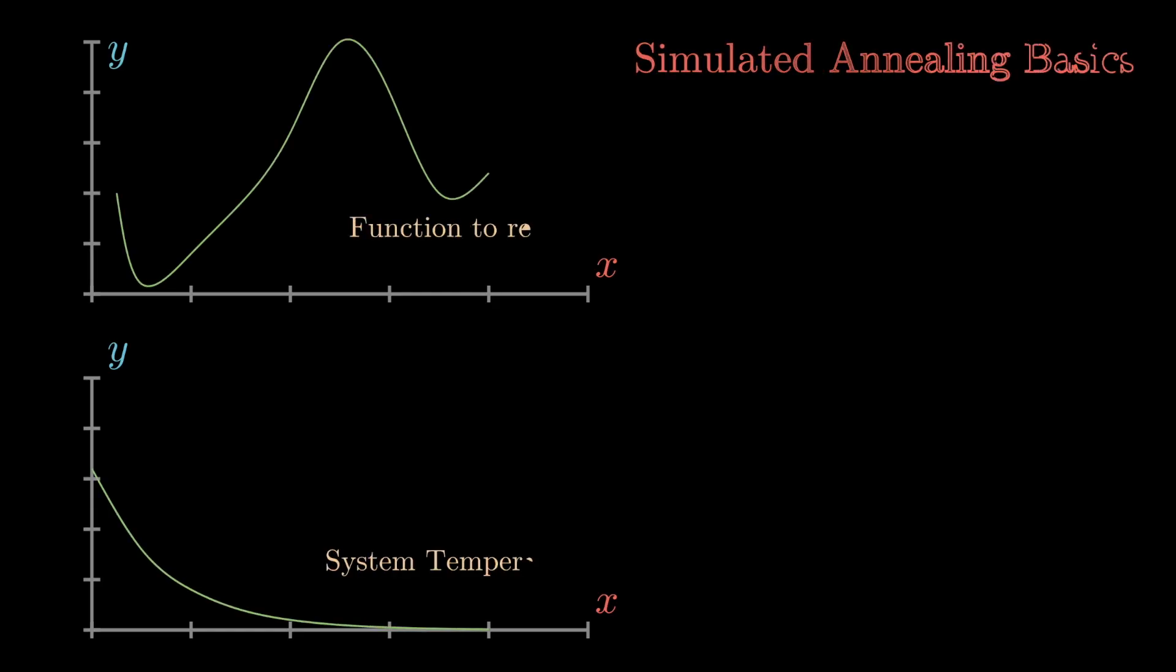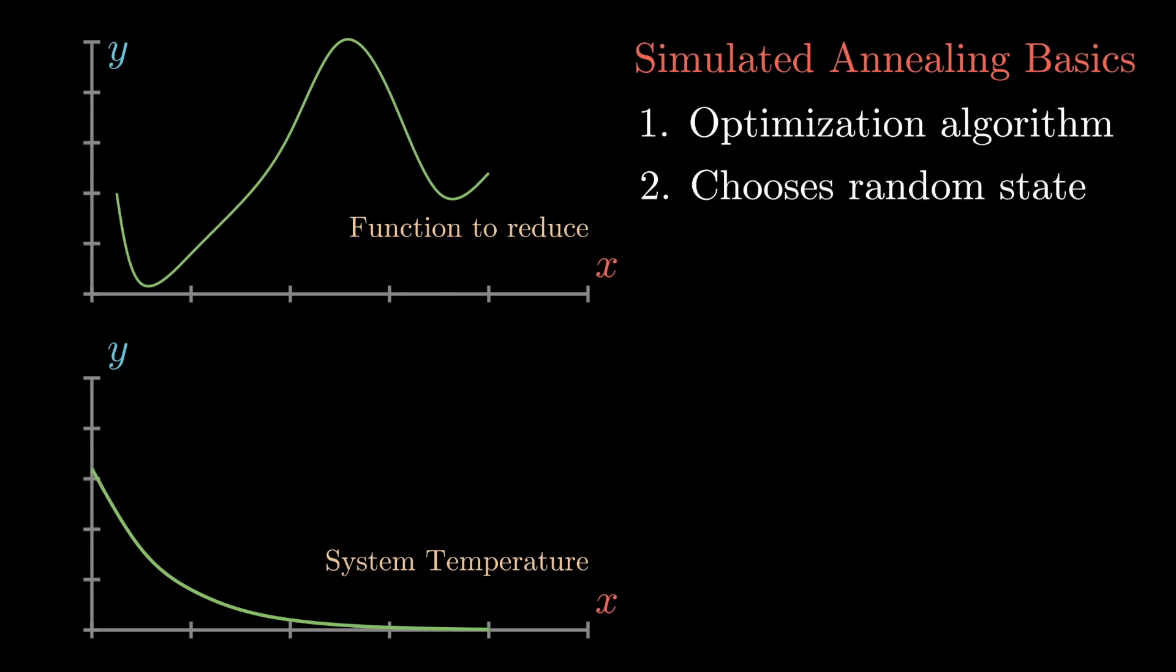Before starting and solving Sudoku by using simulated annealing, let's first start by understanding the basics of simulated annealing. This is an optimization algorithm which means that it can be used to find the minimum of a given function. The way that it does that is by first choosing a random state and evaluating the cost of the function at this certain state.